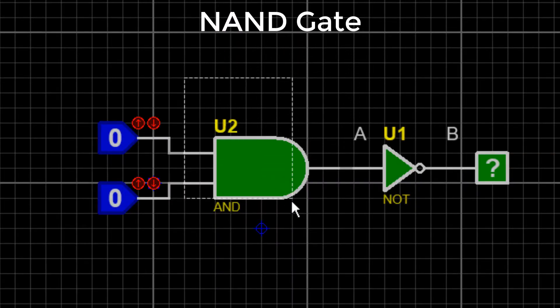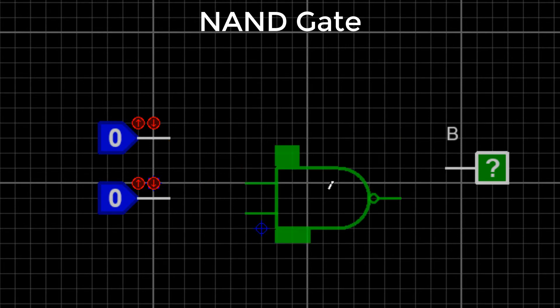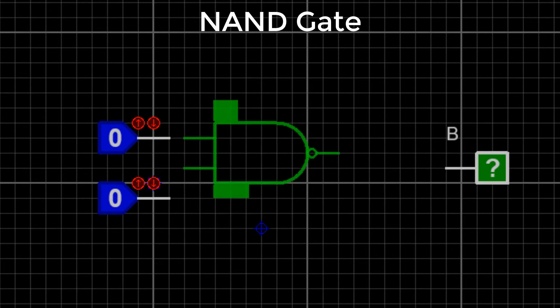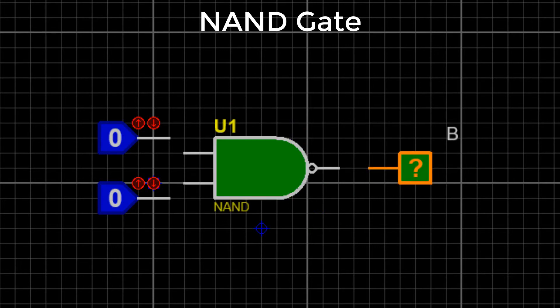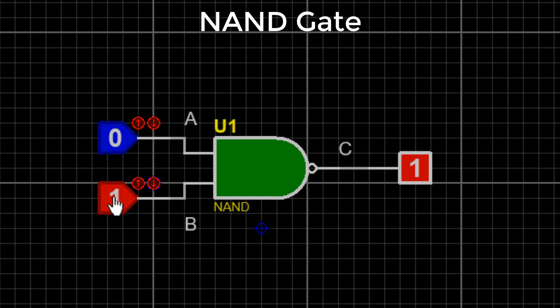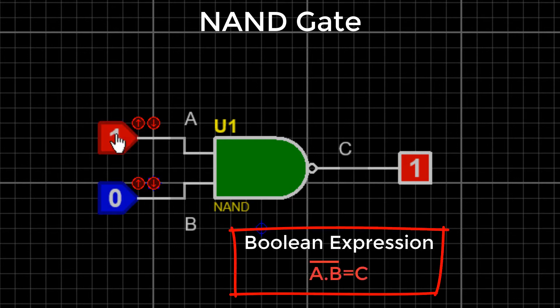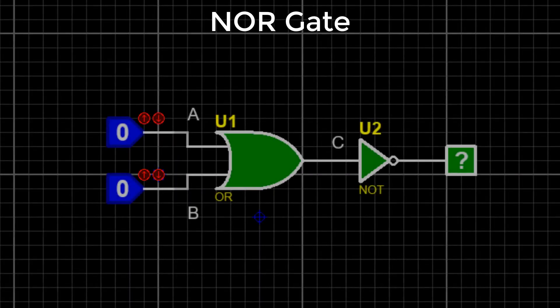Advanced types of logic gates: NAND gate. If we add a NOT gate at the output of an AND gate, we call it a NAND gate. It works the same as the AND gate but gives an inverted output. The NAND gate gives a high output — one — when any of its inputs is low or zero. The boolean expression is A·B = complement of C.